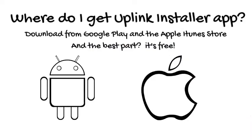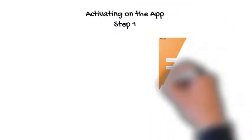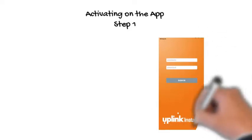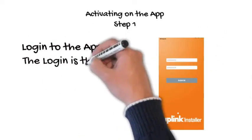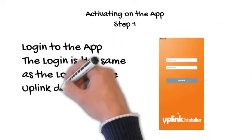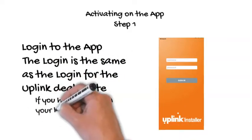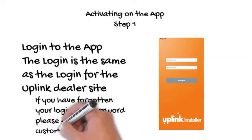Step 1 is logging into the app. The login is the same as the login for the Uplink web portal. If you have forgotten your login, please email customerservice@uplink.com. Allow up to 24 hours for a response by email.